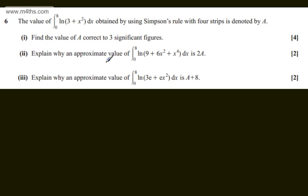This is question number 6. We're told the value of the integral from 0 to 8 of the natural log of 3 plus x squared with respect to x, obtained by using Simpson's rule with 4 strips, is denoted by a. In the first part of the question, for 4 marks, we need to find the value of a correct to 3 significant figures.